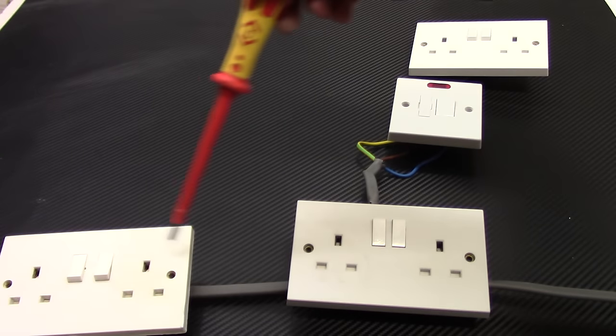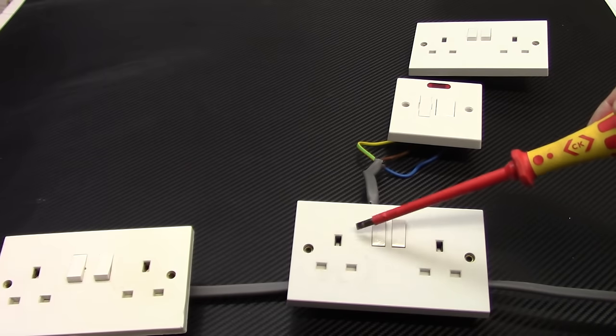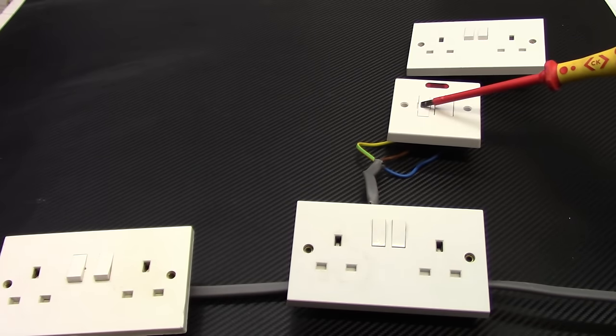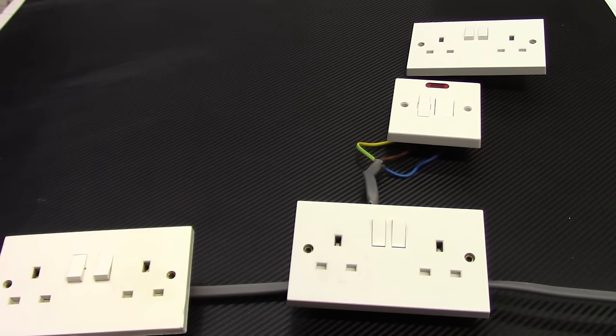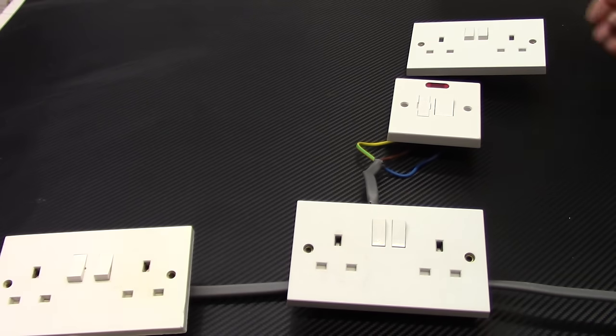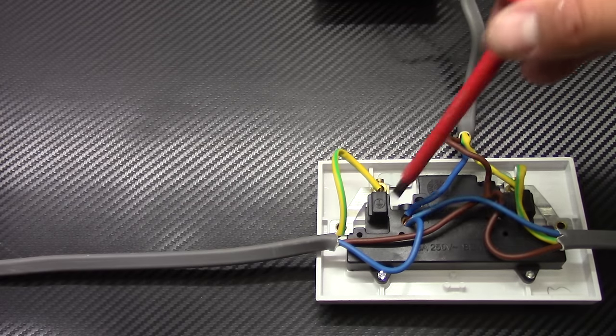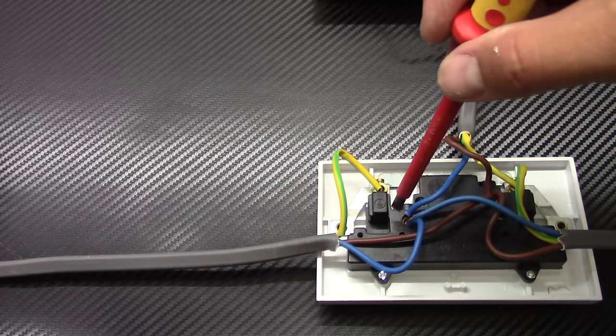So let's say this is our ring final circuit. Then we took the power from this socket up to the FCU. And from FCU up to the fused spare. Let's turn it over. So as you see in this socket outlet that is on the ring we took neutral from the neutral terminal.